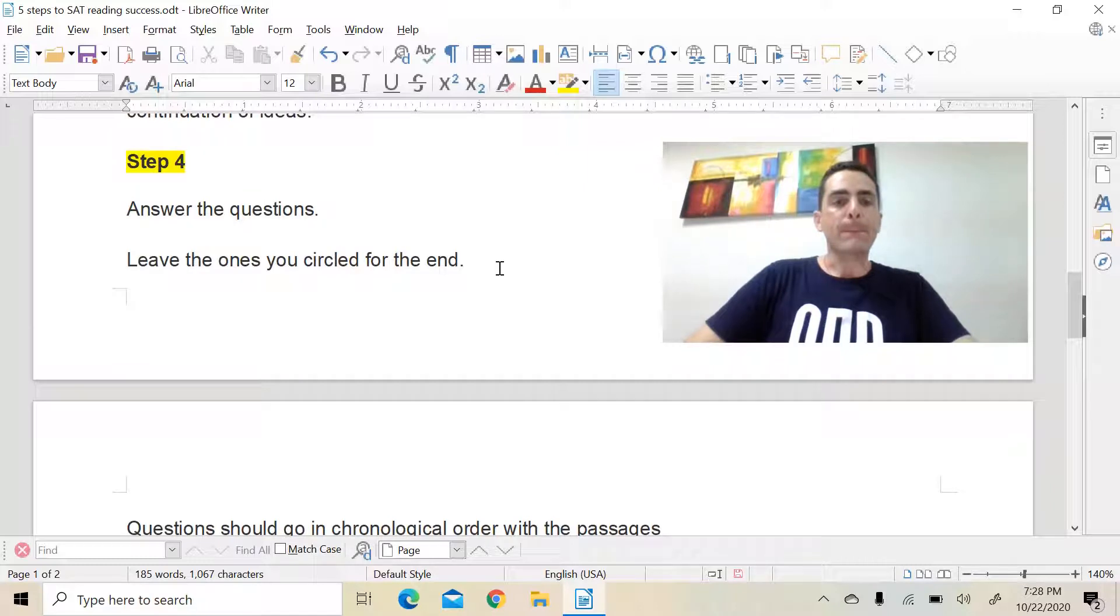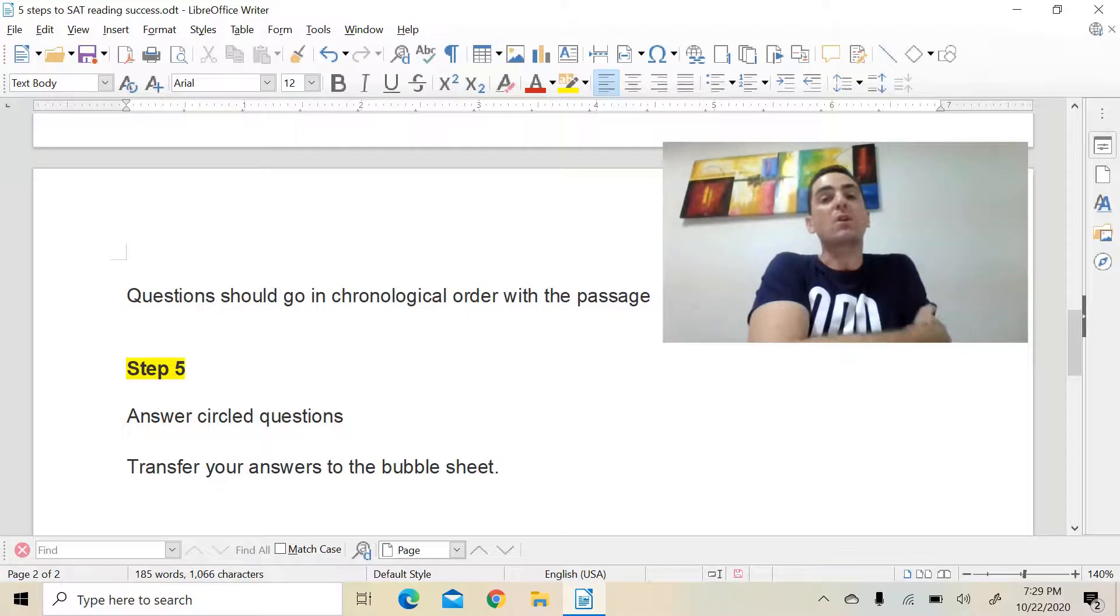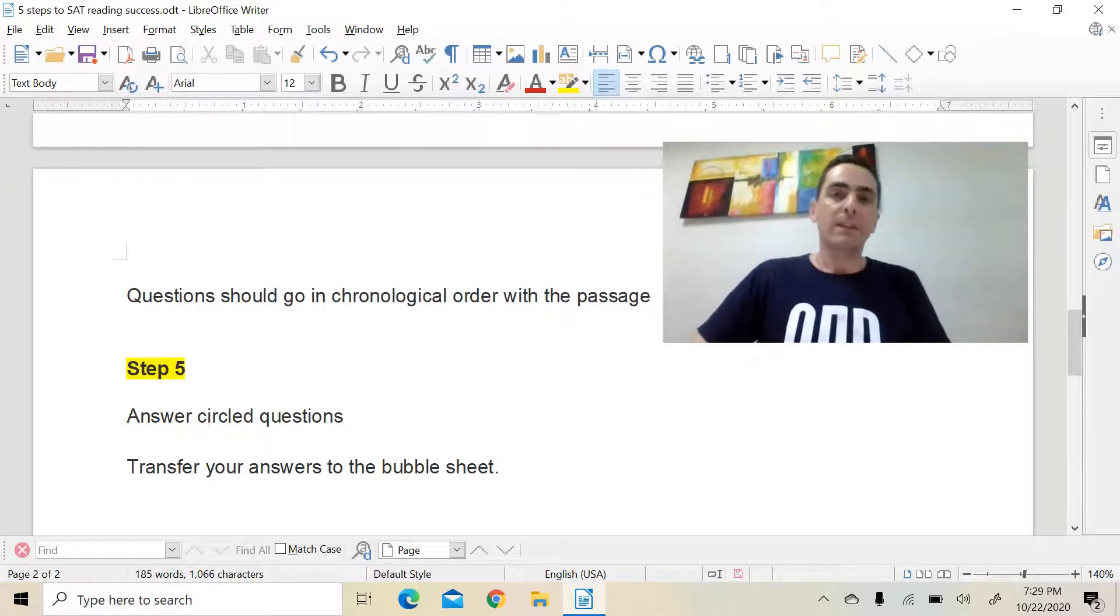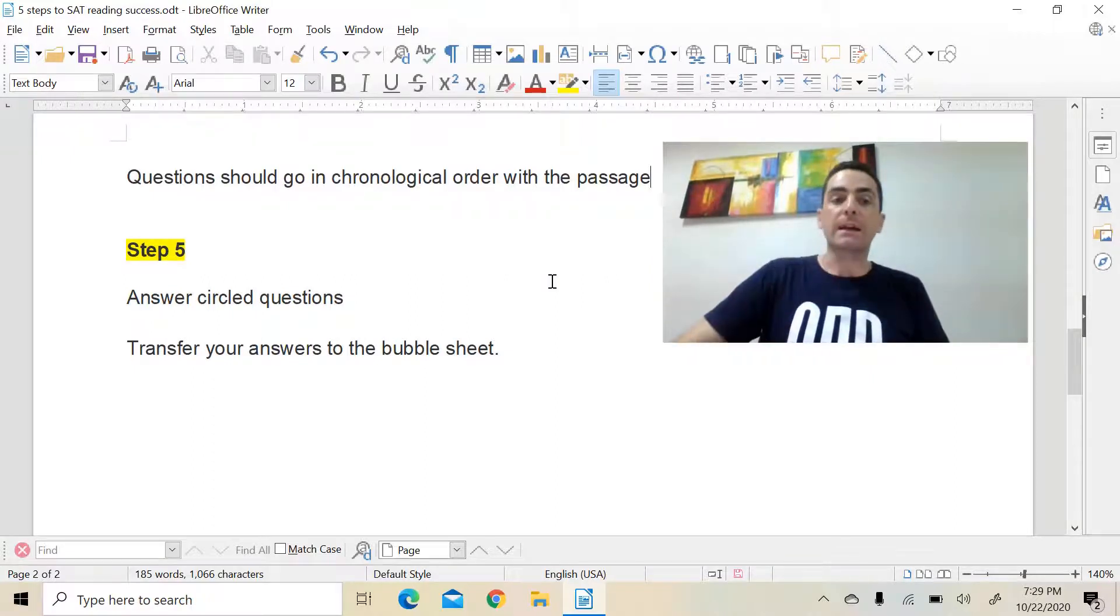Step four, what you do is answer the questions. So the questions that you circled at the beginning in step one, the main idea, big picture questions, just leave those. Put those away, leave those till the end. And then what you'll do is you'll answer the rest of the questions that you have. You'll answer the specific line questions, get those out of the way quickly. And you'll answer all the other questions as well. And these questions will usually go in chronological order with the passage itself. So students often ask, are the questions in chronological order? The answer is, yeah, they are. There might be a rare occurrence or not, but it's almost always the case.